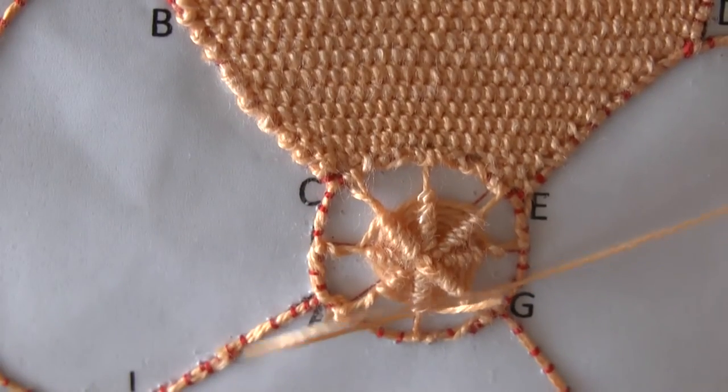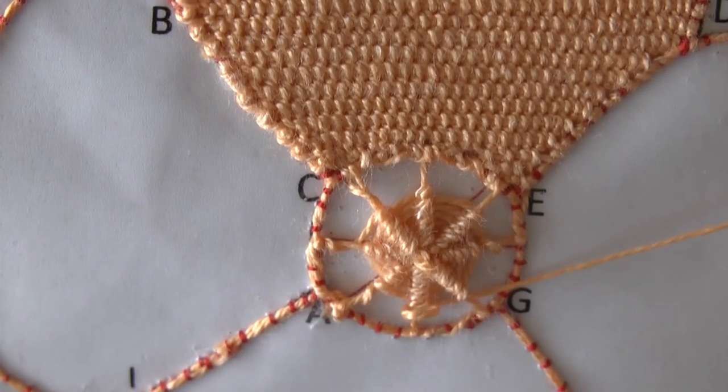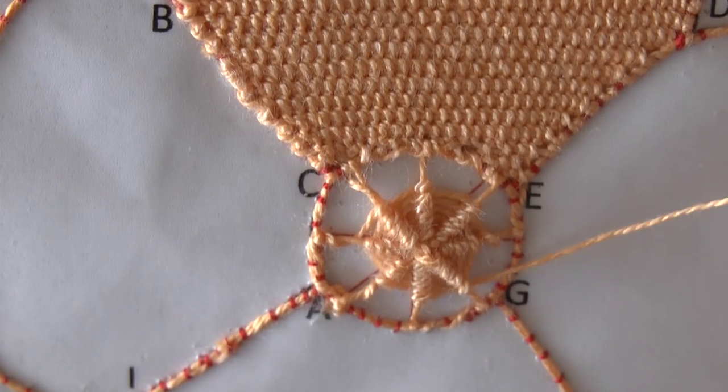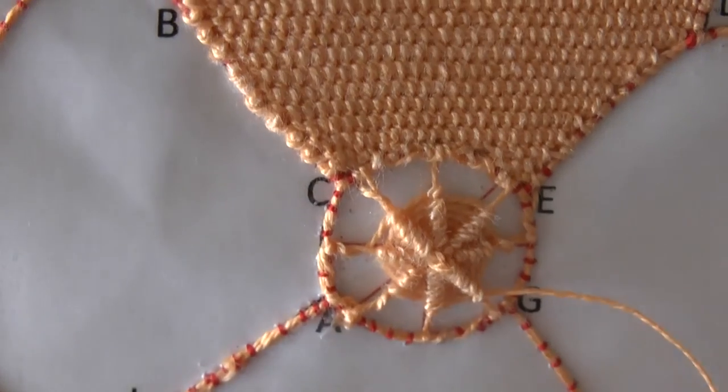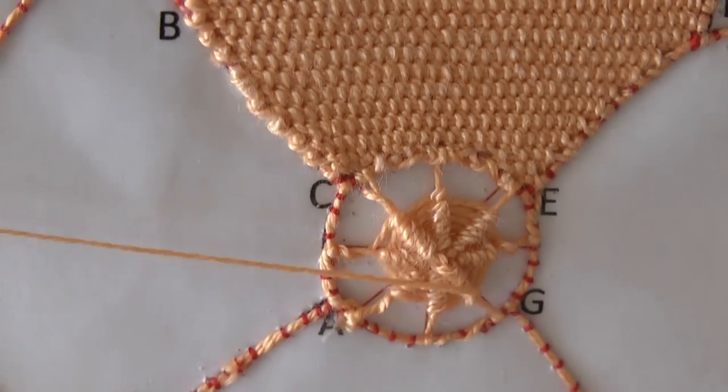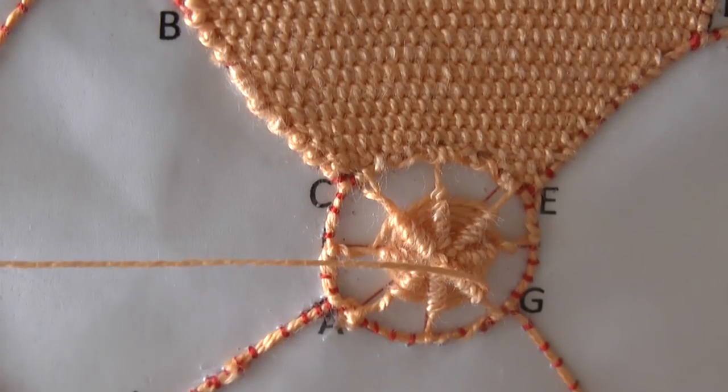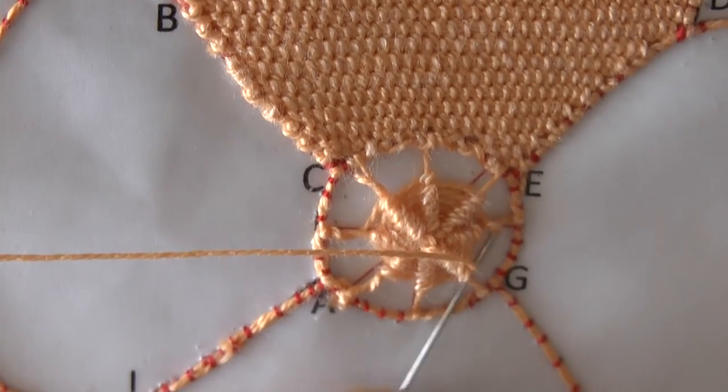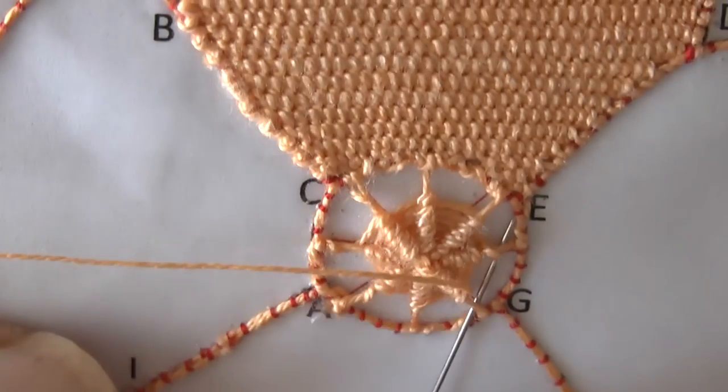Now as you're doing these stitches, as you get towards the outside, don't pull on the spokes too much because you'll distort them. You just need enough tension to keep the thread between the spokes. Let's under this one and the next one.